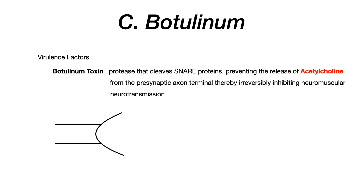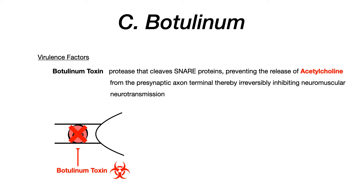To really drive this home, on the slide is a crude drawing of a synapse. In the synapse, acetylcholine is stored in a vesicle. Under normal physiology, the vesicle containing acetylcholine moves to the end of the presynaptic axon terminal and undergoes exocytosis, releasing acetylcholine into the synapse. Botulinum toxin inhibits this process by cleaving SNARE proteins, which are accessory in allowing the vesicle to move forward. When botulinum toxin is introduced, the vesicle never reaches the synapse, acetylcholine is never released, and neuromuscular neurotransmission never occurs.